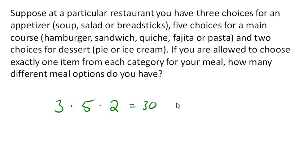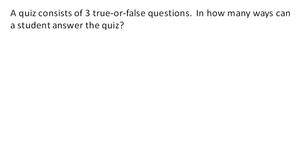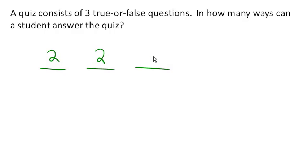It's important to note that this assumes we pick one from each category. One more: suppose a quiz consists of three true or false questions. How many ways can a student answer this? Each of the three questions has two choices, so 2 times 2 times 2 equals 2 to the 3rd, or 8 different ways a student could answer a three-question true or false quiz.